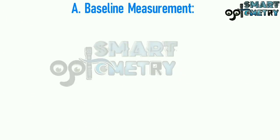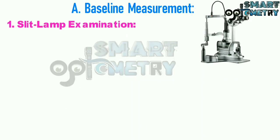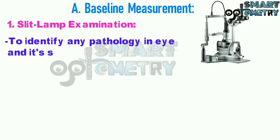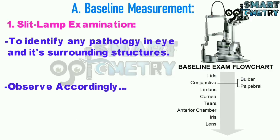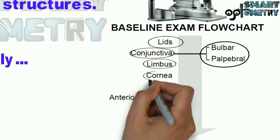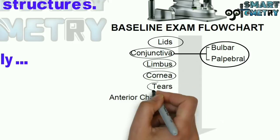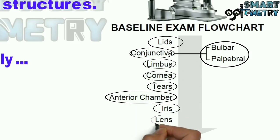Now let's start with baseline measurement. 1) Slit lamp examination: Slit lamp examination is done to identify any pathology in the eye and its surrounding structures. Slit lamp is generally used to observe eyelids and lashes, conjunctiva (both bulbar and palpebral), limbus, cornea, tear film, anterior chamber, iris, and lens.